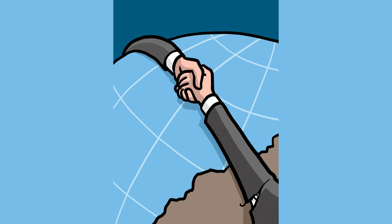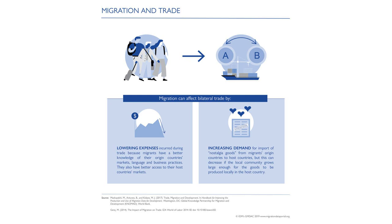One of the key provisions of NAFTA was the gradual elimination of tariffs on various goods and products. This led to a significant increase in trade between the three countries, with industries such as automotive, agriculture, and manufacturing benefiting greatly. Cross-border investments also surged as companies sought to take advantage of the new opportunities created by the agreement.